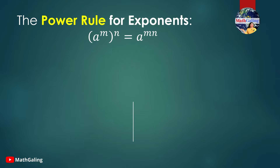The power rule states that to raise a number with an exponent to a power, multiply the exponent times the power. This is often referred to as raising a power to a power, and is defined by the general formula: a to the m raised to the n power is equal to a to the m times n.